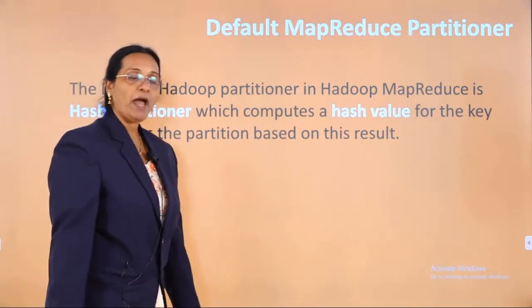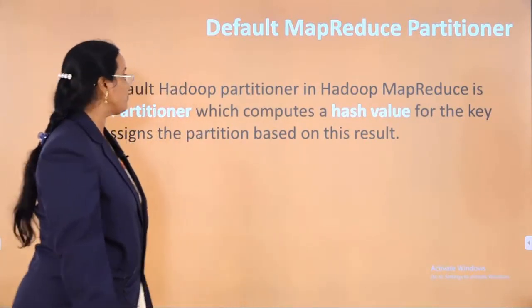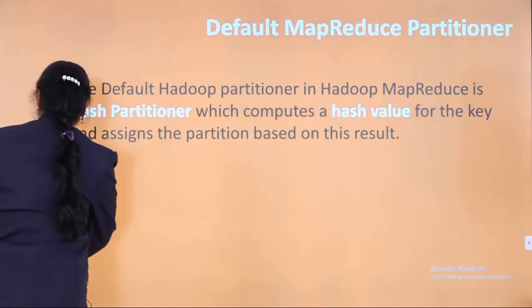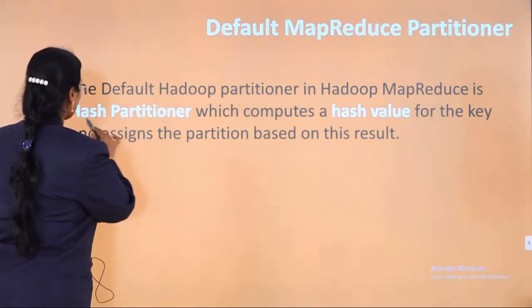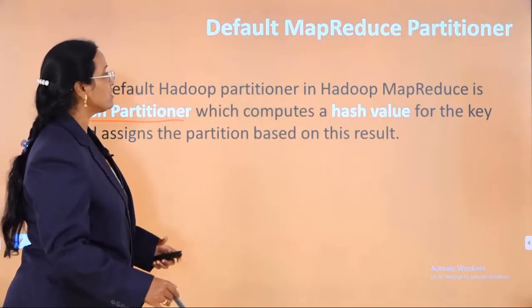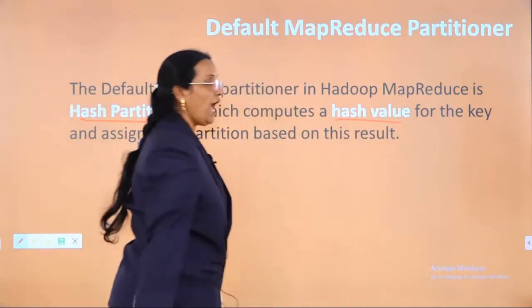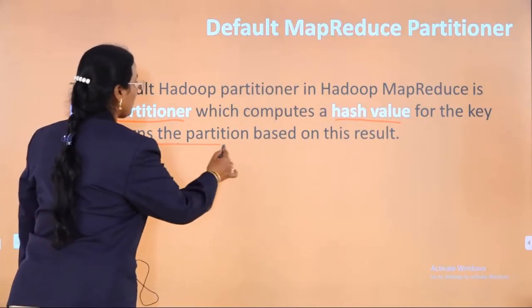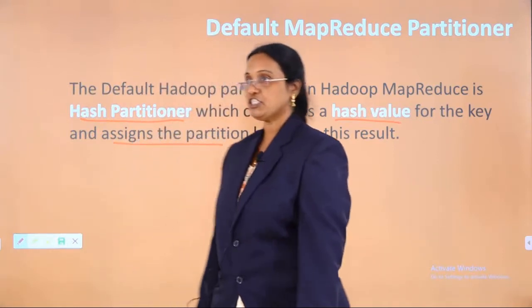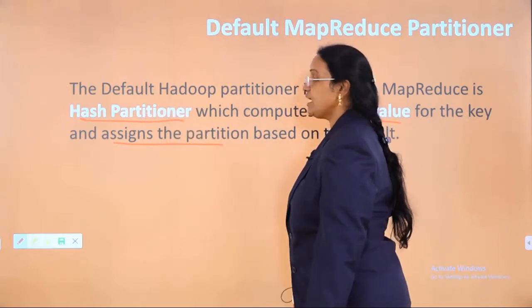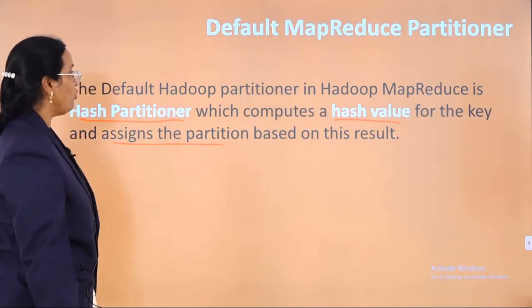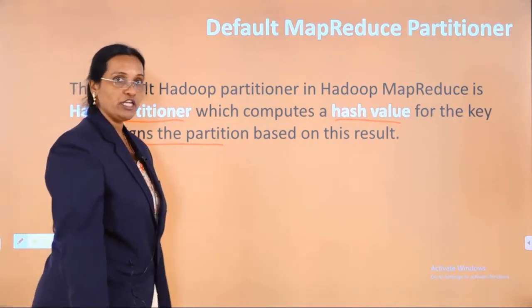There are default MapReduce partitioners. The default Hadoop partitioner in Hadoop MapReduce is the Hash Partitioner. The Hash Partitioner computes the hash value for the key and assigns the partitions based on the result.